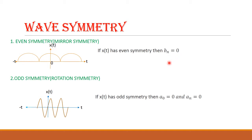Similarly, if the signal exhibits odd symmetry, then we can directly substitute a₀ = 0 and aₙ = 0 in our general equation.